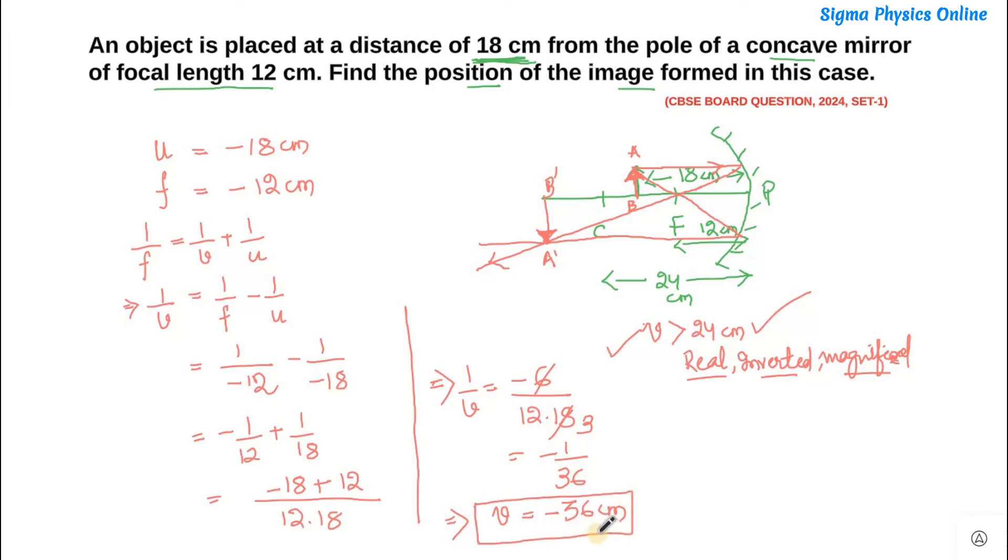So the image formed is at a distance of 36 cm, which is greater than 24 cm. So our answer is correct, and then we got a negative sign in the answer indicating that the image is formed in front of the mirror.